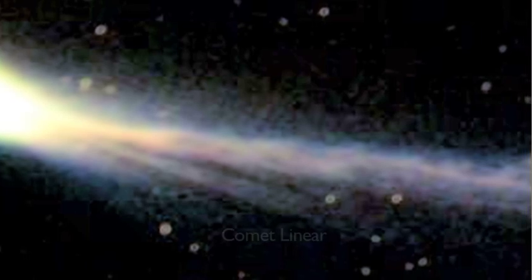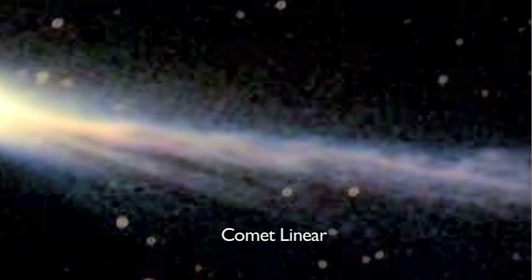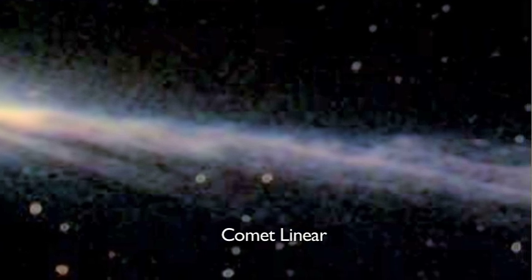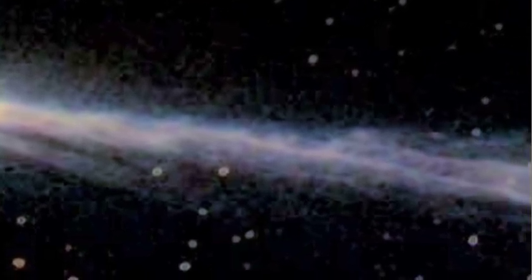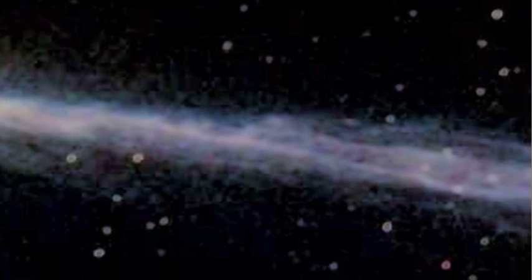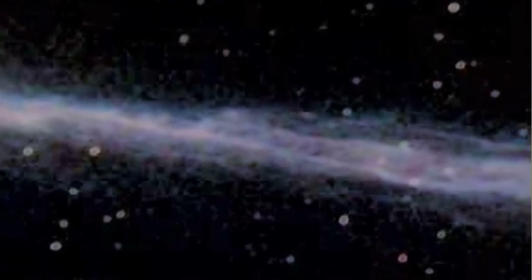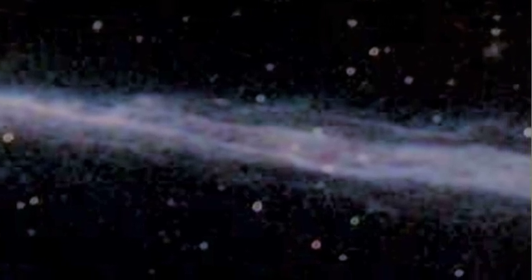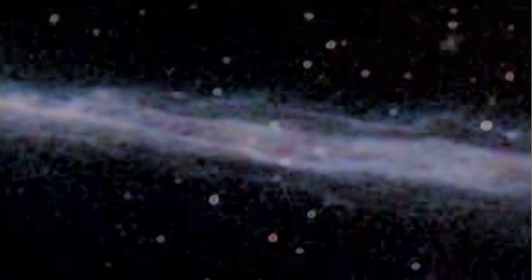The tails of comets reveal well-defined twisting filaments extending up to tens of millions of miles without dissipating in the vacuum of space. For proponents of the electric model, this contradiction of neutral gas behavior is no surprise. It is the testament to the comet's electrified environment.